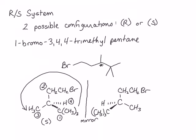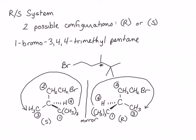Now let's look at the mirror image. Again, hydrogen is the lowest priority group and the tert-butyl is the highest. The other groups are the same as on the other molecule. We point the lowest priority group away from us, then look at the rotation in order from one to two to three. This is a clockwise rotation, giving the designation R. So the compound on the left is S-1-bromo-3,4,4-trimethylpentane, and the compound on the right is R-1-bromo-3,4,4-trimethylpentane.